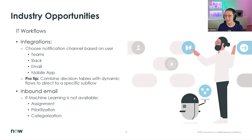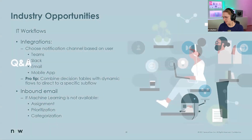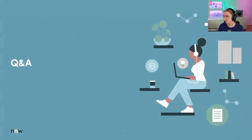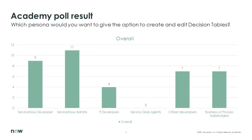Let's look at the poll results. The majority want to share with ServiceNow people, but also about 60% — seven out of eleven — are interested in sharing decision tables with citizen developers and business or process stakeholders. That's just the right mix, and I'm excited to see you think this is a good experience for those people.